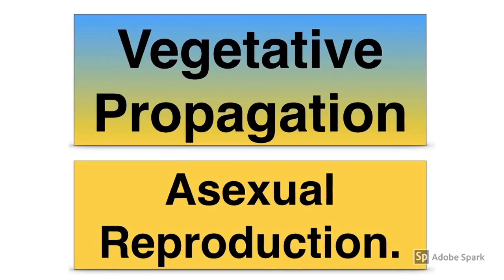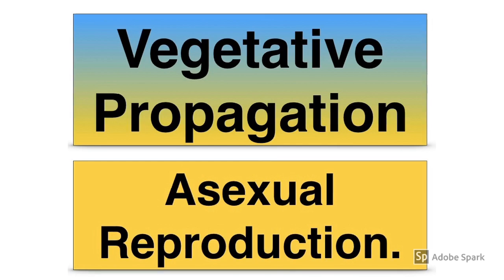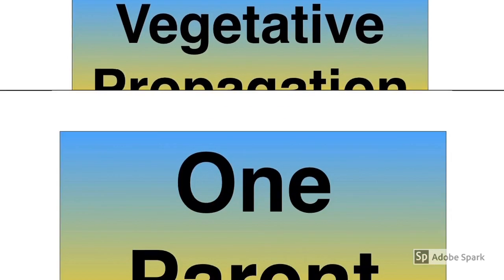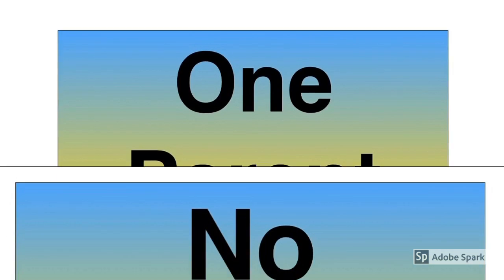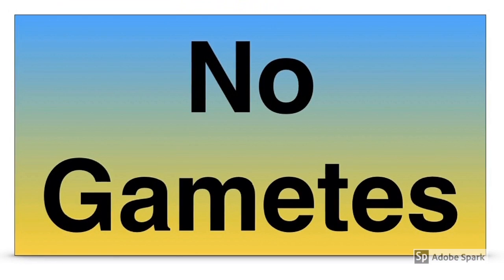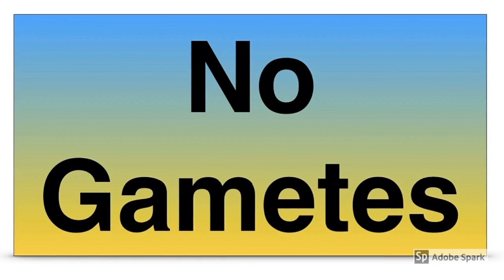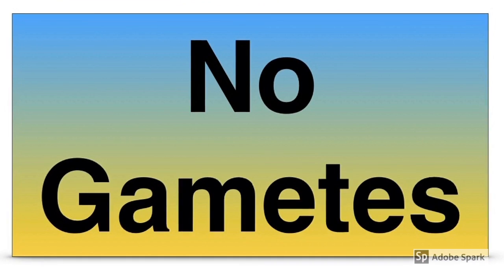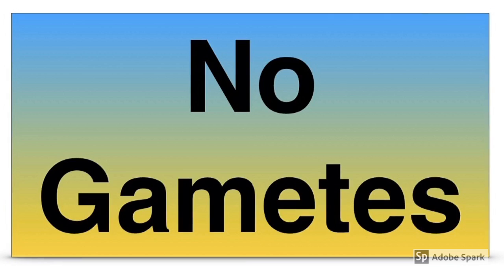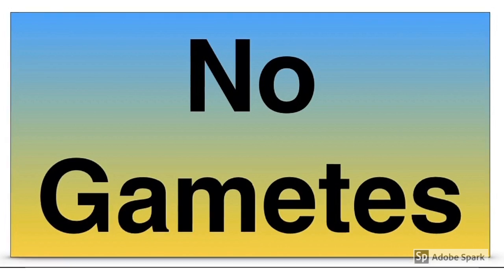Vegetative propagation is asexual reproduction in plants. This means that it involves only one parent and no gametes are involved — no sex cells, no cells capable of fusion.